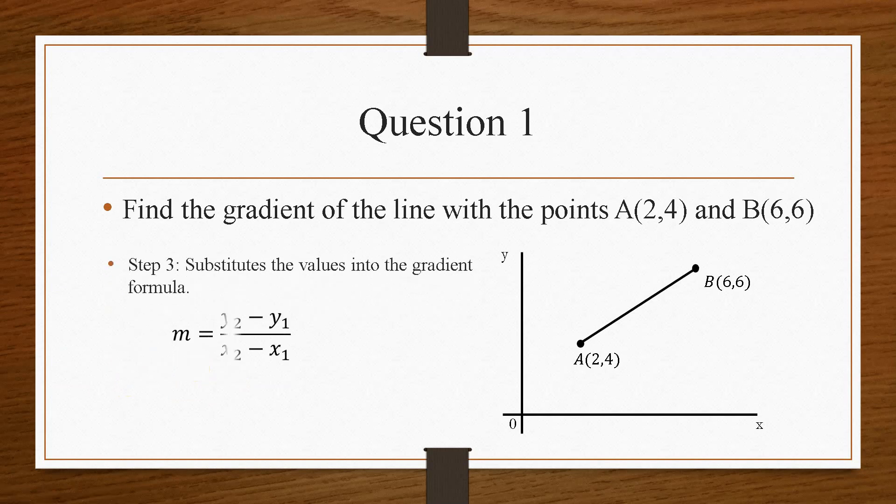And then the final step is simply substituting the values of the y2, the y1, the x2, and the x1 into this formula. And then it is just simple maths from here. So 6 minus 4 is 2, over 6 minus 2 is 4, simplifies to half. So that means that this gradient is positive.